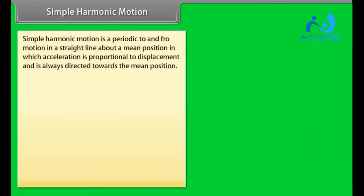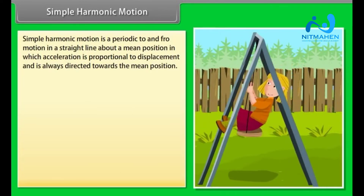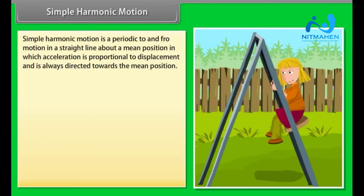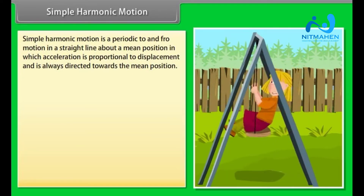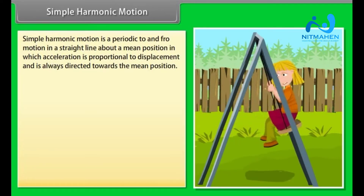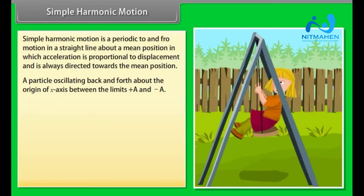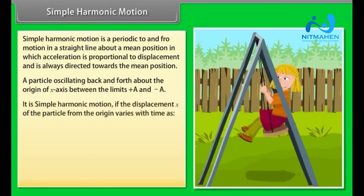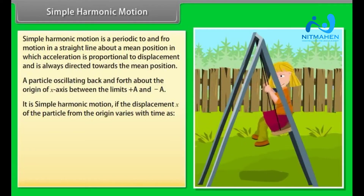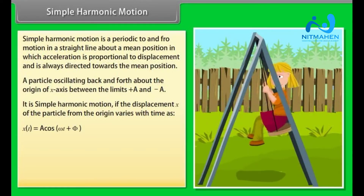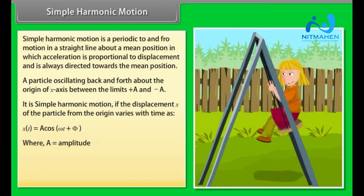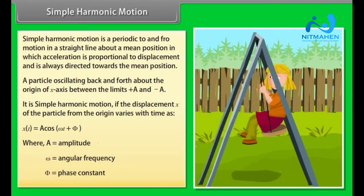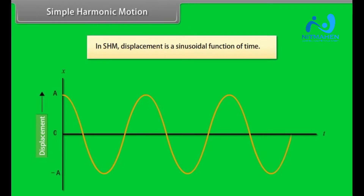Simple harmonic motion is a periodic to-and-fro motion in a straight line about a mean position, in which acceleration is proportional to displacement and is always directed towards the mean position. Consider a particle oscillating back and forth about the origin of an X axis between the limits +A and −A. It is simple harmonic motion if the displacement X of the particle from the origin varies with time as X(t) = A cos(ωt + φ), where A is the amplitude, ω is the angular frequency, and φ is the phase constant. In simple harmonic motion, displacement is a sinusoidal function of time.